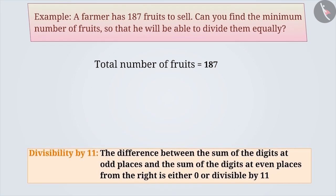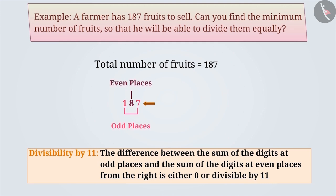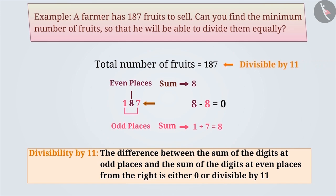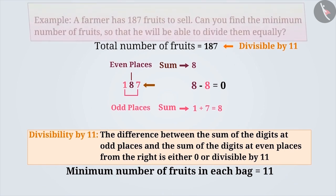Now, let's check the divisibility by 11. In 187, considering from right, 1 and 7 are at odd places and 8 is at an even place. The sum of the digits at odd places is 1 plus 7, which is 8. Similarly, the sum of the digits at even places is 8. Since the difference between these two, that is 8 minus 8 is equal to 0, therefore 187 is divisible by 11. Thus, there should be a minimum of 11 fruits in each bag.